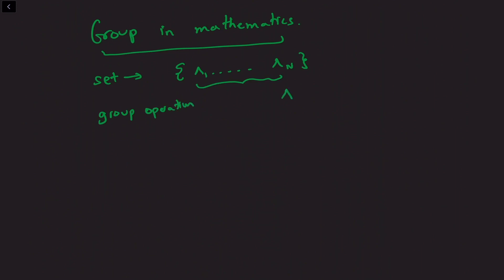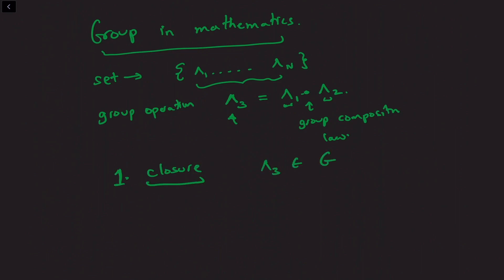That is, we can take any two elements of the set and using the group composition law, the composition tells us what we get when we take two elements of this group. If we get back another element of this set, then we satisfy the axiom of closure — under the group operation, lambda 3 also belongs to the group. So this set, let's call it G, and lambda 3 belongs to the set.